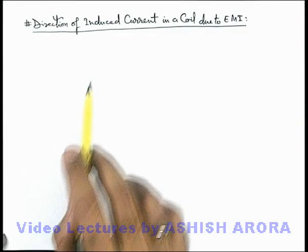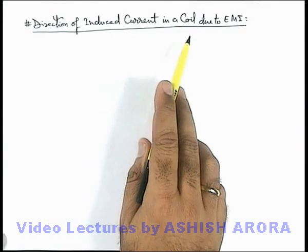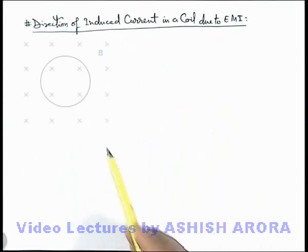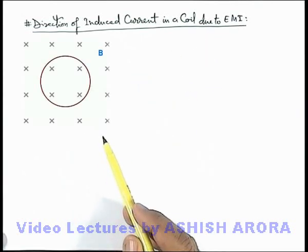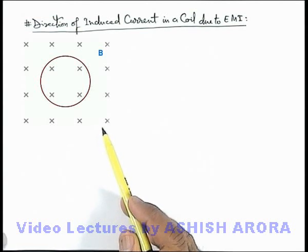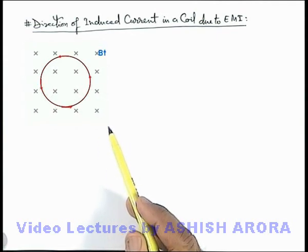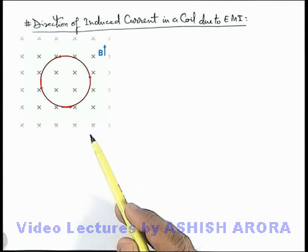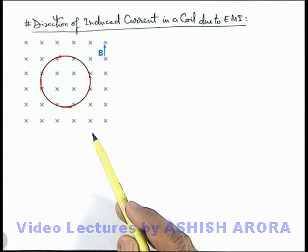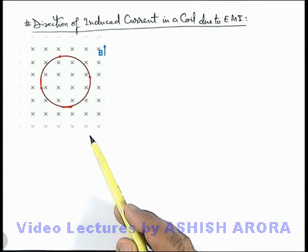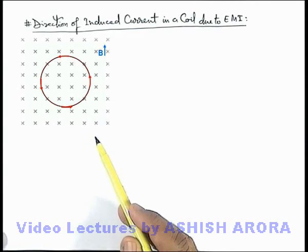Let us discuss the direction of induced current in a coil due to electromagnetic induction. Here you can see a situation in which there is a circular coil on which an inward magnetic induction is applied. If the magnetic induction increases with time, the flux linked with the coil is changing, due to which an induced EMF is produced in it, which will cause a current to flow in the coil.